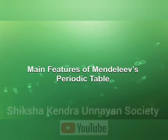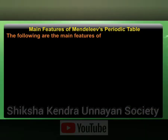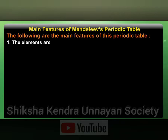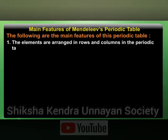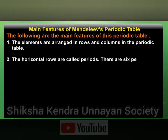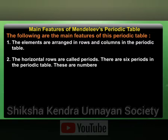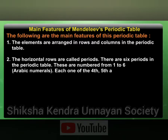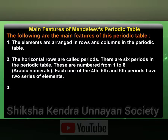The main features of Mendeleev's periodic table are as follows: the elements are arranged in rows and columns. The horizontal rows are called periods; there are 6 periods in the periodic table, numbered from 1 to 6 in Arabic numerals. Each one of the 4th, 5th, and 6th periods has 2 series of elements.